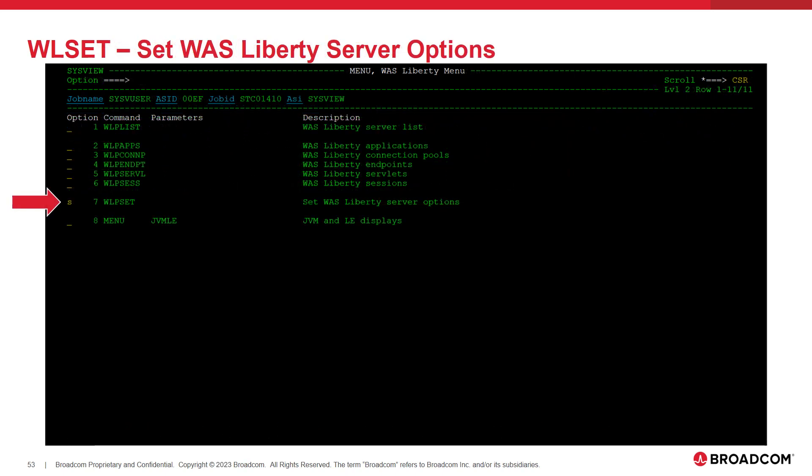The final command listed on the WLP menu is the WLP SET command. The WLP SET command has no display as it is a SysView function command. This command is used by the action line commands on the WLP apps, CONP, and endpoint commands. However, this command can also be issued directly on the primary command line. Issue the help WLP SET command in SysView for more information.